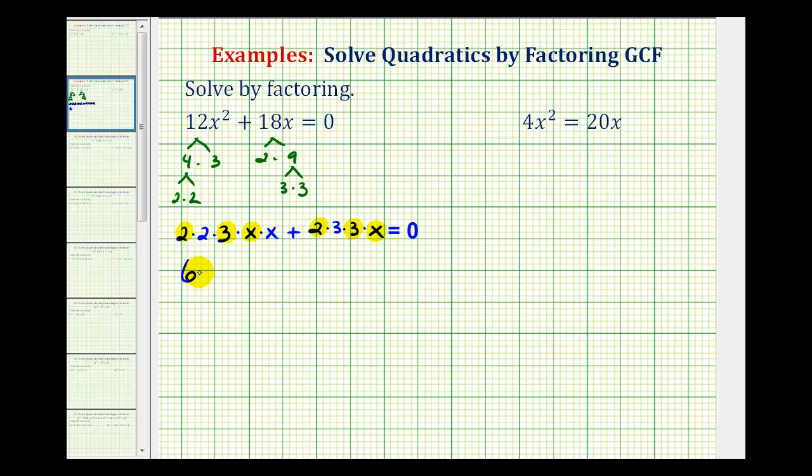So if we factor out 6x, we can see we're going to be left with 2x plus 3. And since this product is equal to zero, we can use the zero product property to now solve this equation. If this product is equal to zero, either the first factor of 6x must equal zero, or the second factor of 2x plus 3 must equal zero.